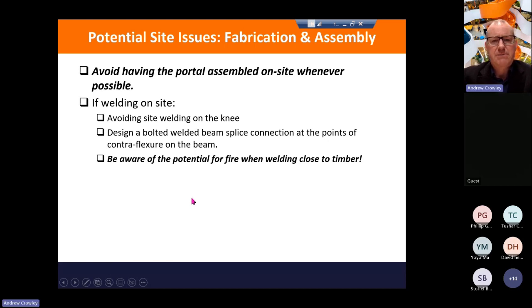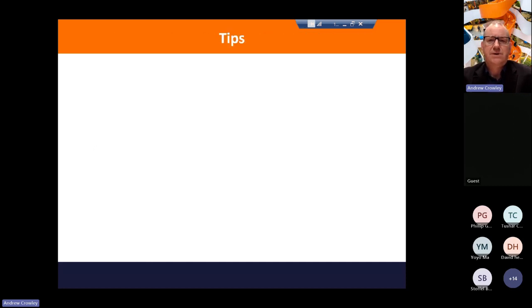So avoid welding the whole thing on site. But if you must do welding on site, avoid welding the knees. What they suggest is design a bolted welded beam splice connection at the points of contraflection of the beam. And don't forget to be aware of potential fire when welding close to timber, because by the time you come to weld it, there'll be timber elements in your structure as well. So if you can avoid doing site welding, all the better.